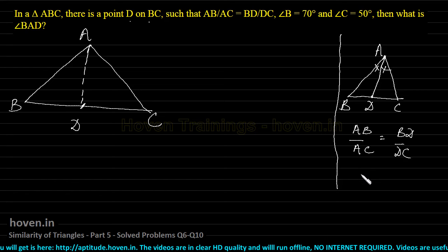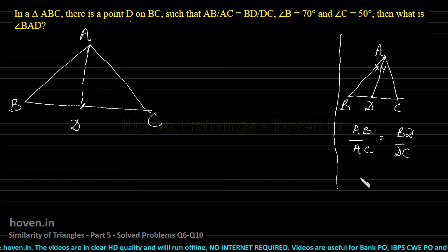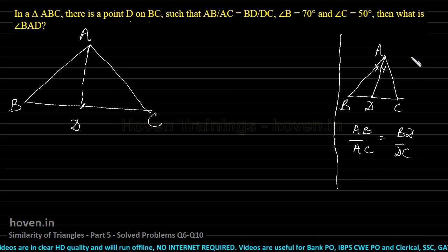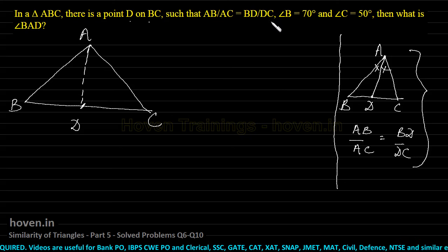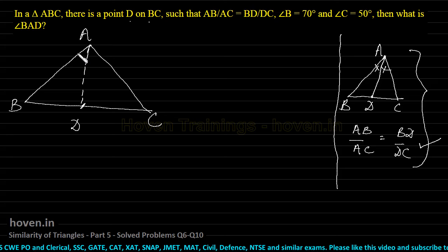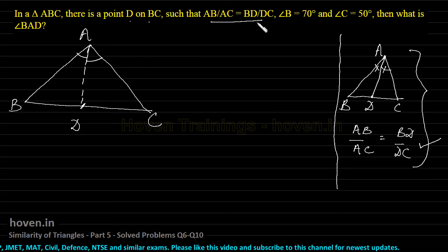I told you that previous year questions require remembering certain results, and this was one of them. In our given question, AB by AC equals BD by DC has been given, but nothing about these angles. However, we can safely assume that if this ratio holds, then these angles will be equal to each other.